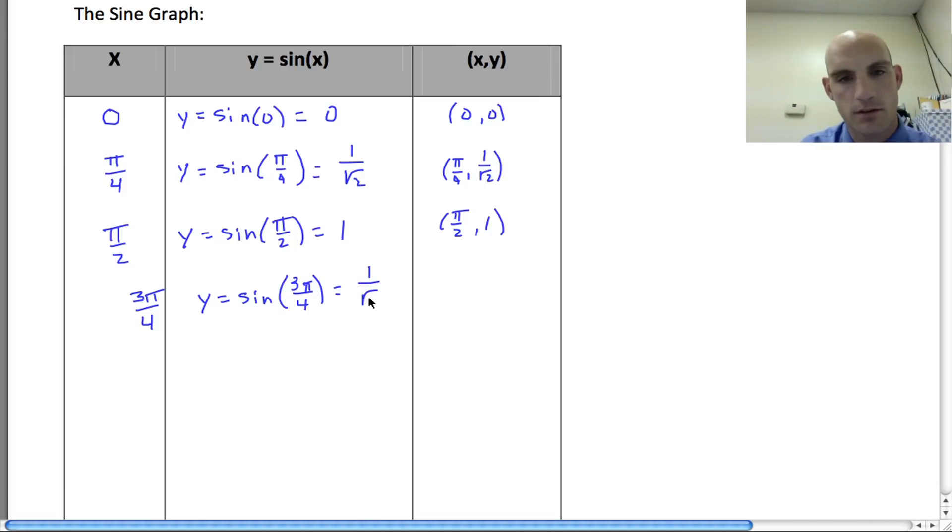As we move around the unit circle, it's going to become abundantly clear to us that the sine curve is going to have a distinct look. We've been using this for so long that we understand that the values are certainly related. When I do the sine of 3π/4, I'm once again going to get 1/√2. So my value is 3π/4, 1/√2. Moving around, I make my way to π, y = sin(π), which is equal to zero once again.